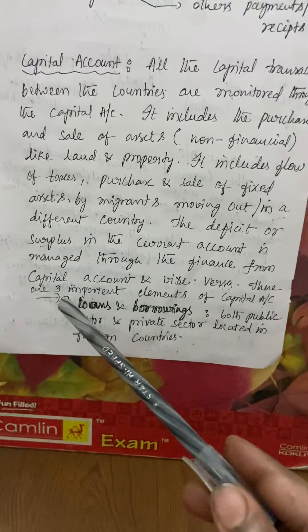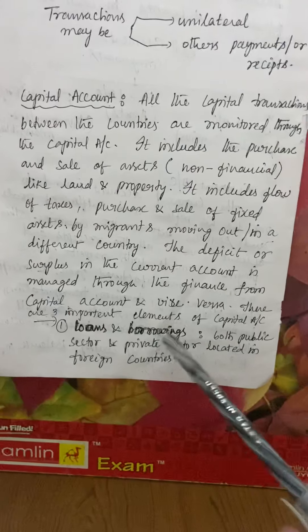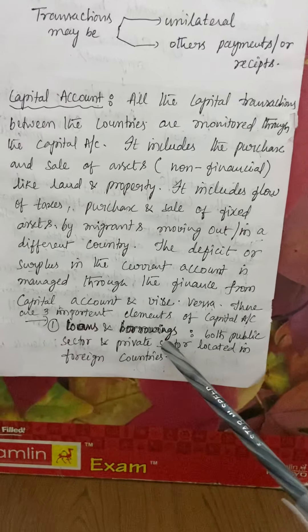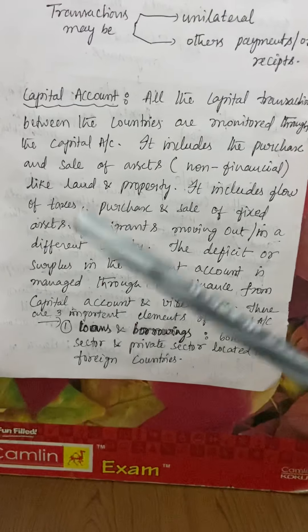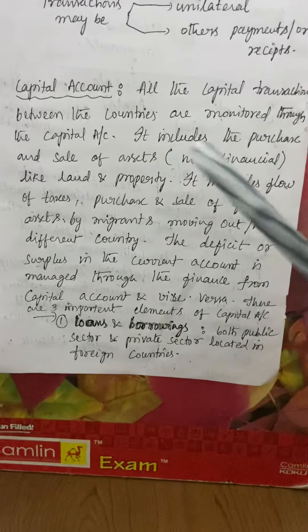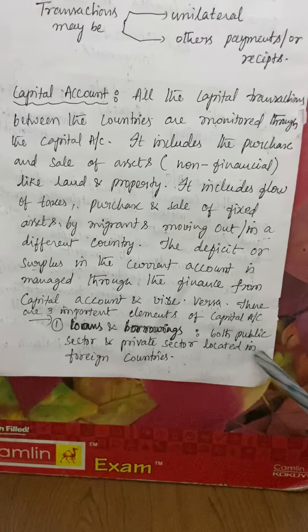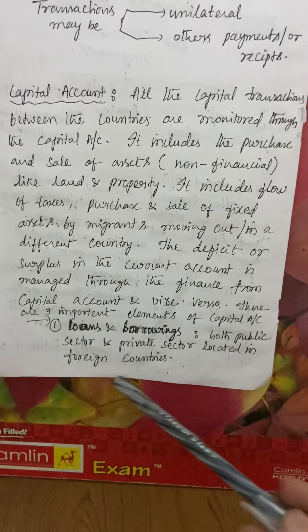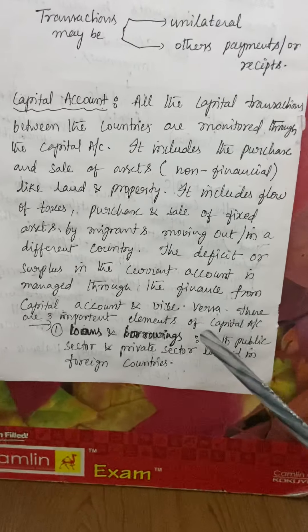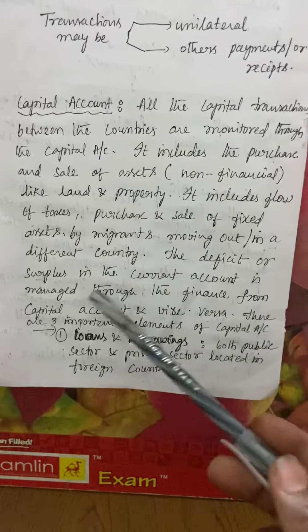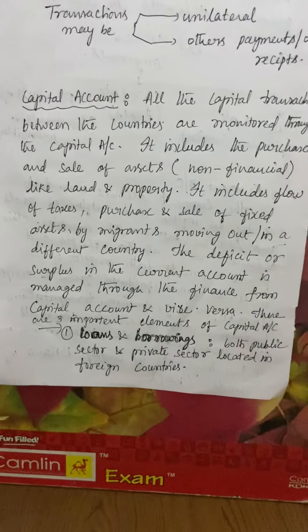There are three main elements in the capital account. The first is loans and borrowings — whatever loans are given to other countries or taken from other countries, whether from the public sector or private sector, come under the capital account. These include loans borrowed from other countries or loans given to other countries.